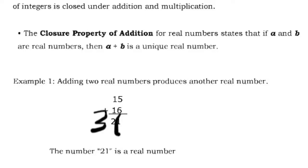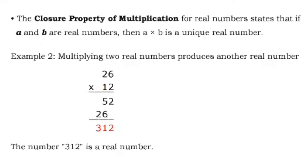So the number 31 is a real number. The closure property of multiplication for real numbers states that if A and B are real numbers, then A times B is a unique real number. For example, 26 times 12: 2 times 26 is 52, 1 times 26 is 26, and the result is 312. So the number 312 is a real number. If you add and multiply two integers or real numbers, you get a unique real number or integer.